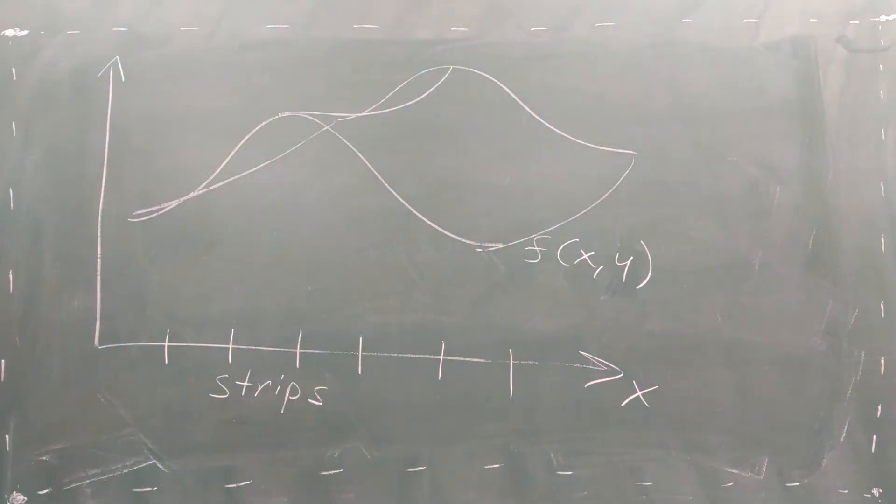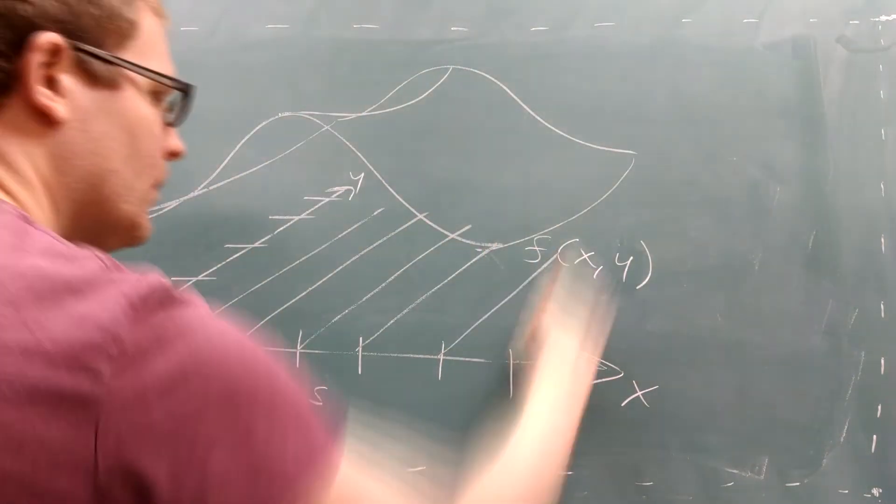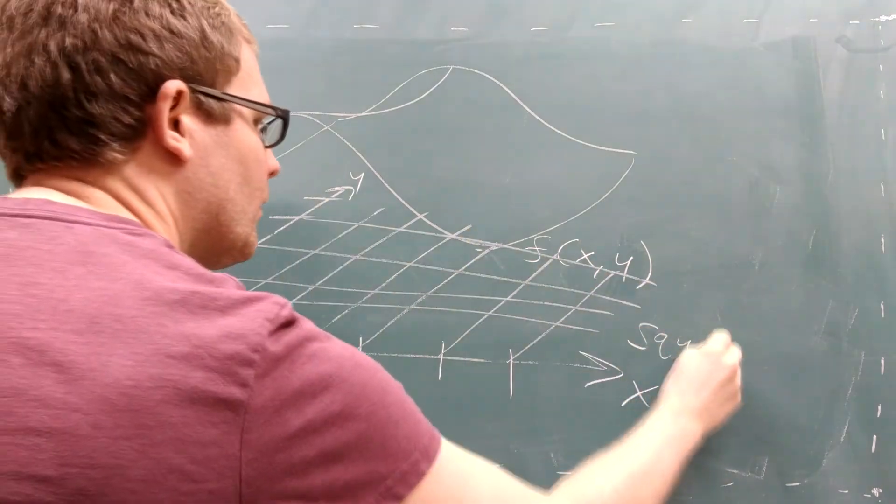For a function of two independent variables, these pieces are two-dimensional squares and we have to move along two axes.